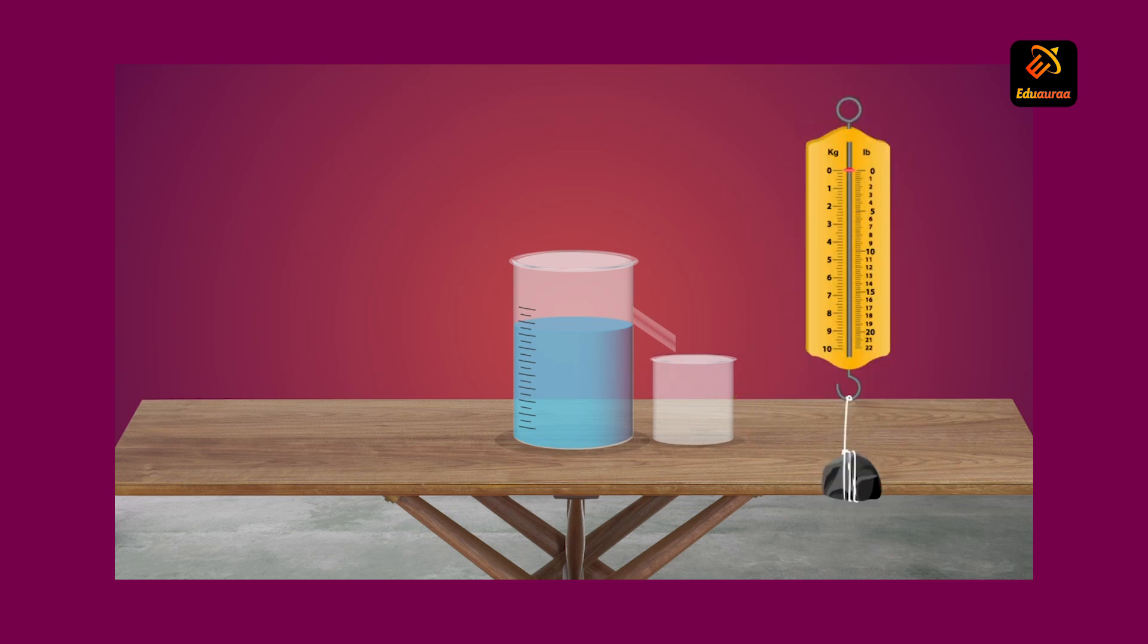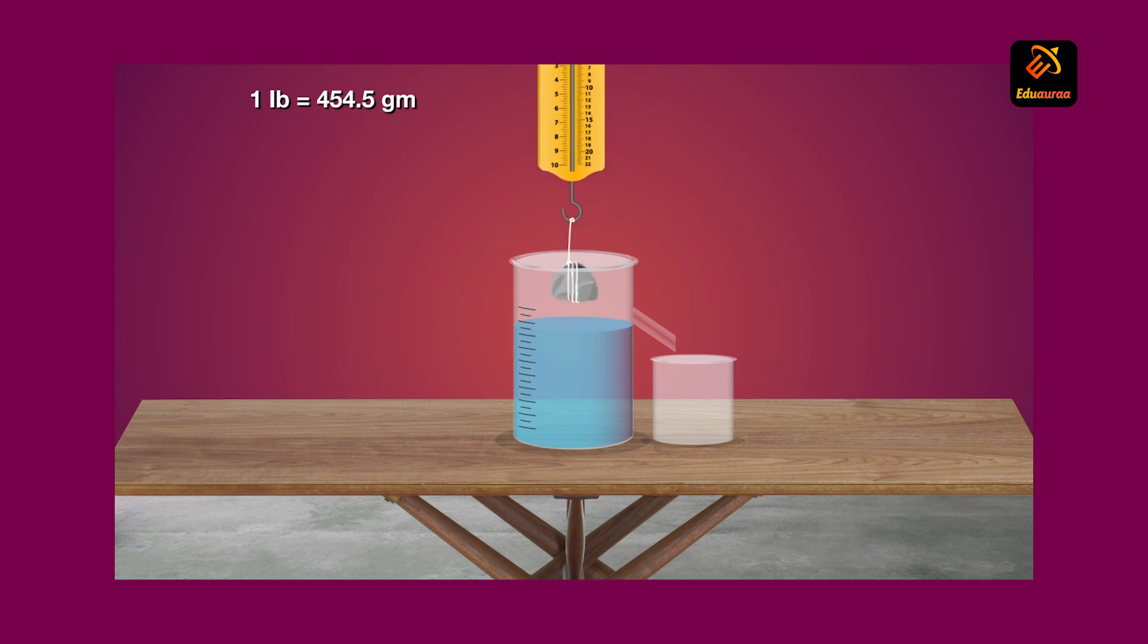Suspend the stone from the hook of the spring balance and record its weight. Gradually lower the stone into the eureka can containing water. Record the reading of the spring balance now.